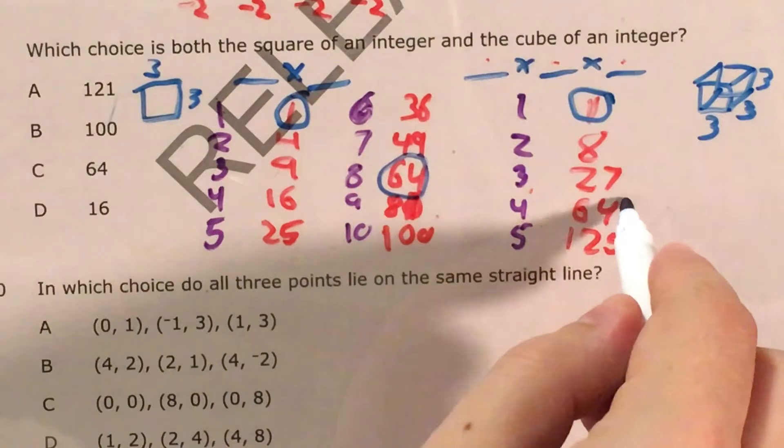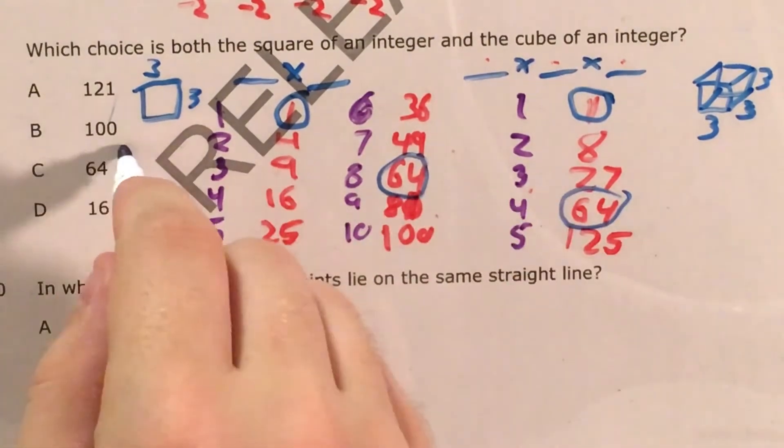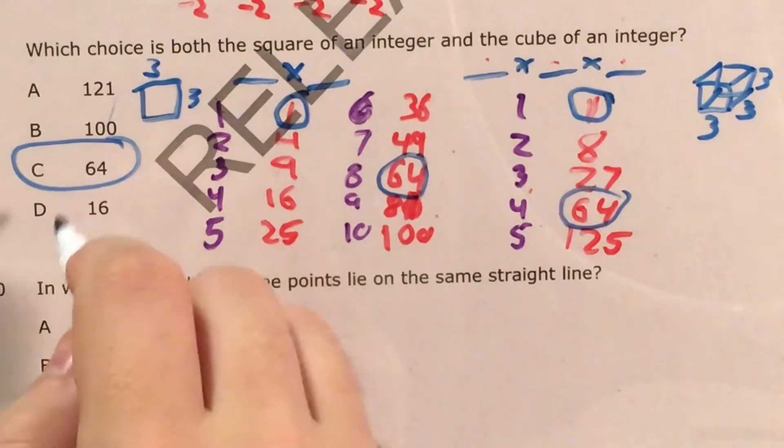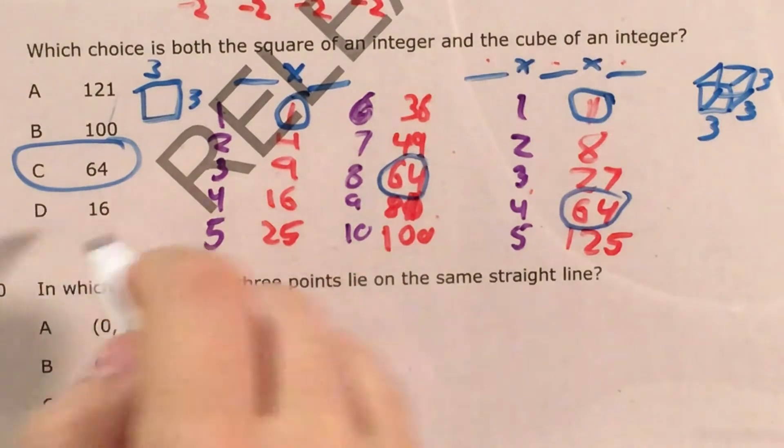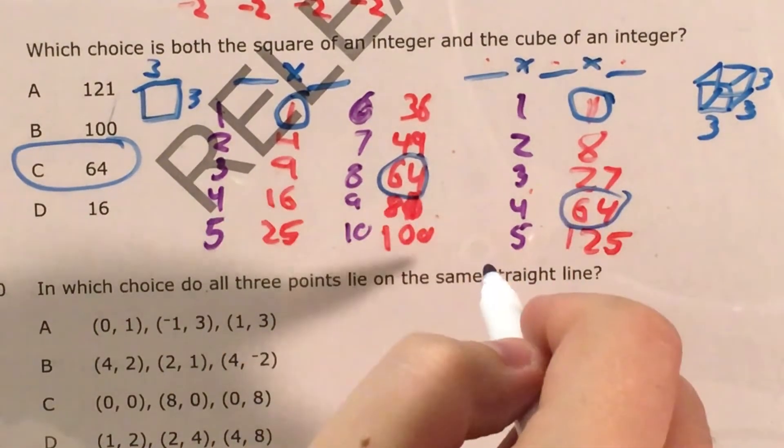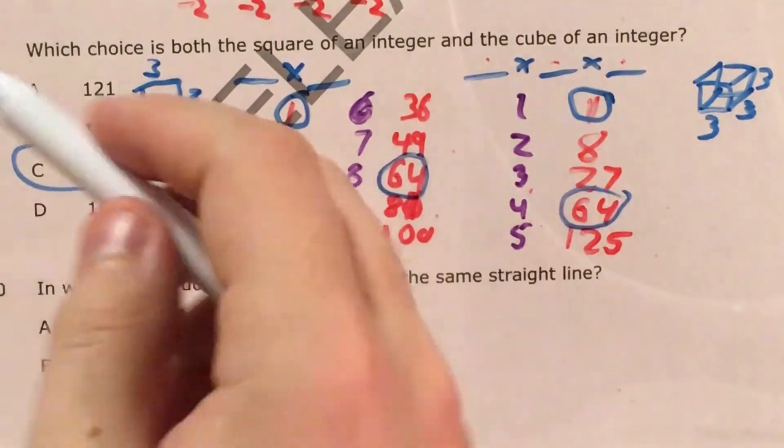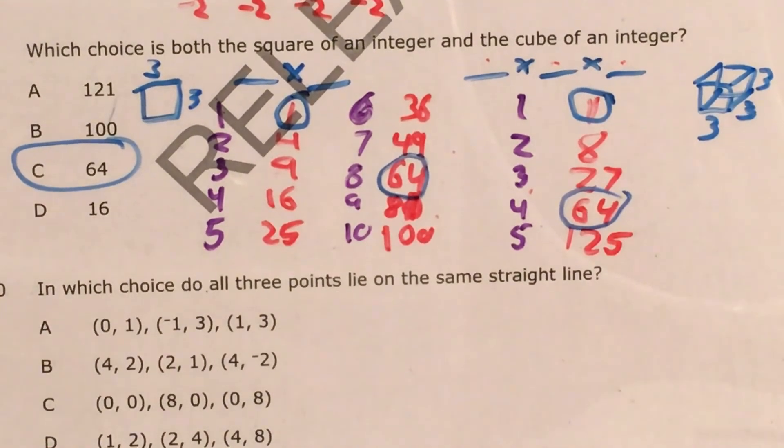Next one that I can see that shows up both places is 64, which is 8 squared, and also 4 cubed. And that's my answer. 64 showed up in my list of square numbers and my list of cube numbers, so it's going to be my answer, 64c.